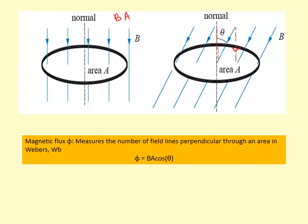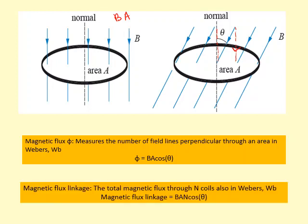Magnetic flux linkage is when, instead of having just one loop, you have a number of loops on top of each other — like a coil. So if you have N loops, you simply multiply the magnetic flux by N to get the magnetic flux linkage.